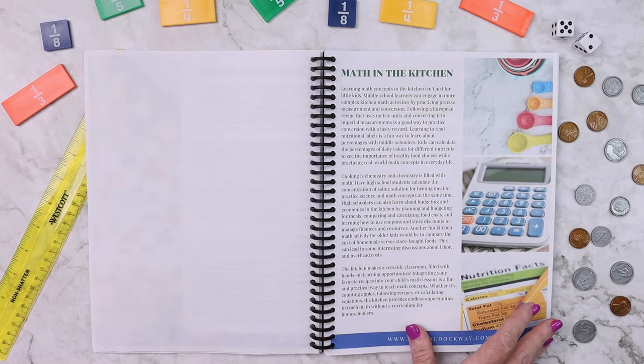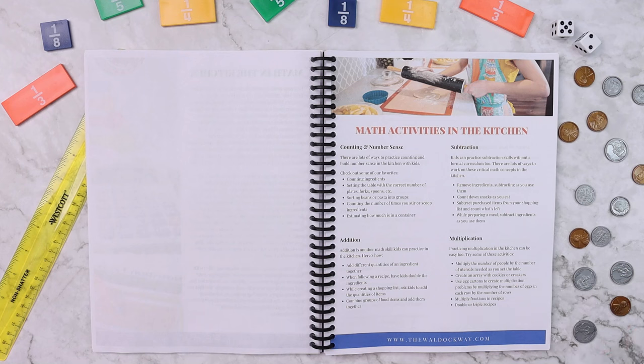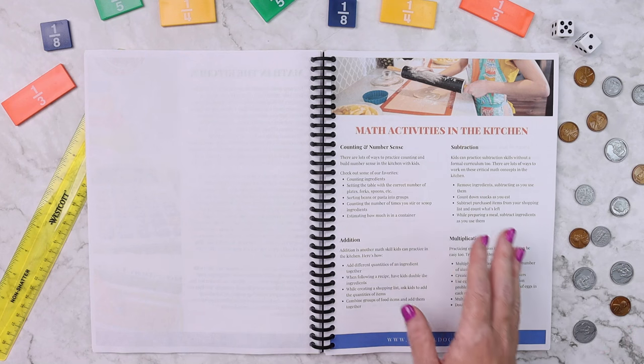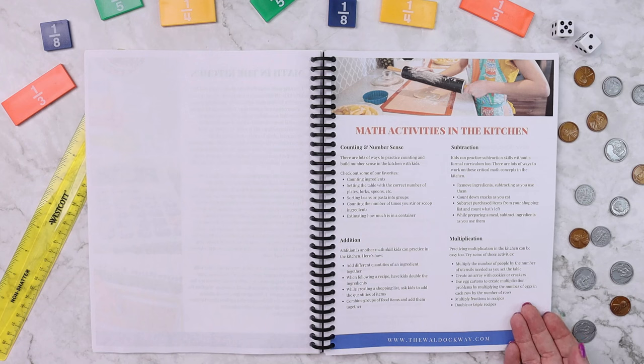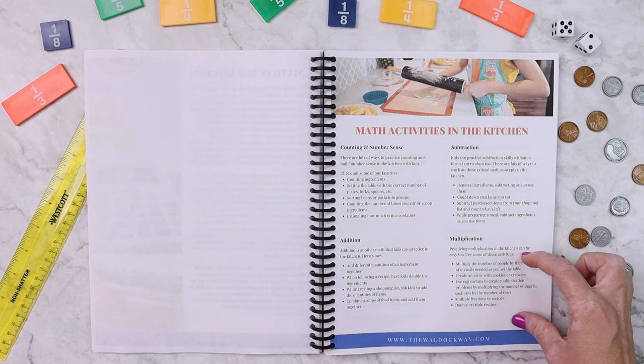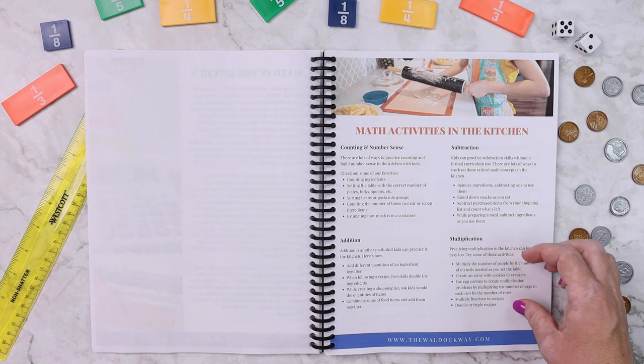One of the things that I was super excited about and what I wish I had when Emily was little, and I'm glad I have now, is that I don't have to think about application. I can say I want to work on multiplication and I want to do some baking today. And here are some real life in the kitchen activities that we can do.